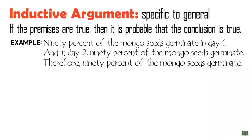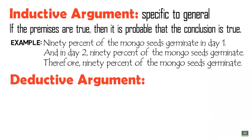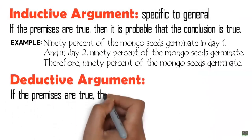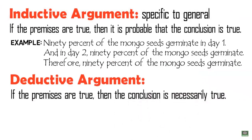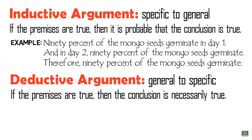In this example, we can say that inductive arguments are based on observations or experiments. Deductive arguments, on the other hand, are ones in which it is claimed that if the premises are true, then the conclusion is necessarily true. Unlike inductive arguments, deductive arguments proceed from the general to the particular. A deductive argument begins with a general statement or hypothesis and then examines the possibilities to reach a specific logical conclusion.